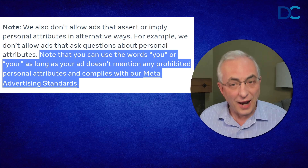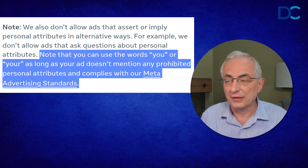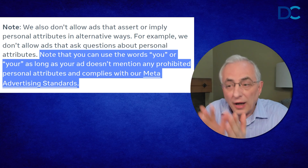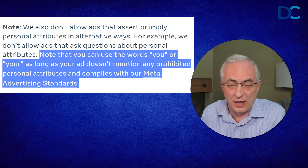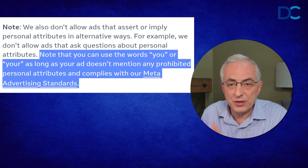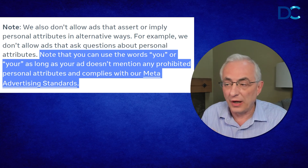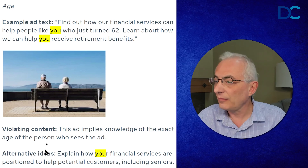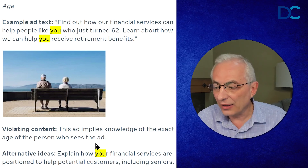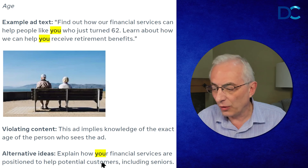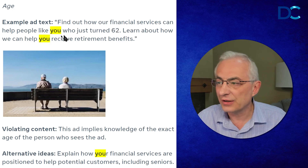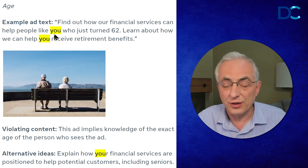Since a lot of you are actually advertising in those categories and are saying, 'I still can't use 'you' or 'your' — so how do I solve this?' Let me show you, from their ad categories and prohibited personal attributes standards, what they say. Here's an example of an ad: 'Find out how our financial services can help people like you who have just turned 62.'